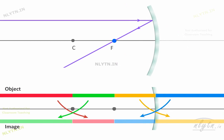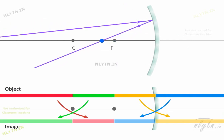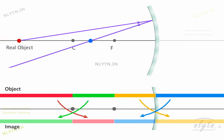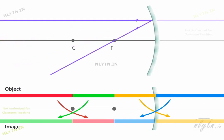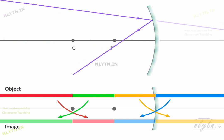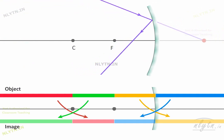Note that if we start with parallel rays from the object at infinity and make the rays diverging, then the object is real. If we make the rays converging, then the object is virtual.